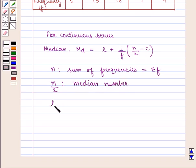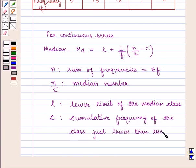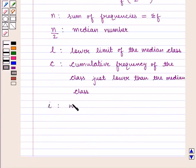L is the lower limit of the median class. C is the cumulative frequency of the class just lower than the median class. I is the width of the median class and F is the frequency of the median class.